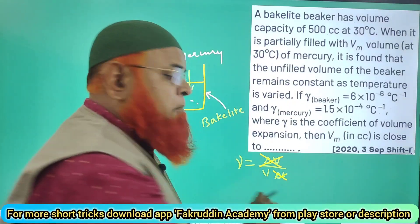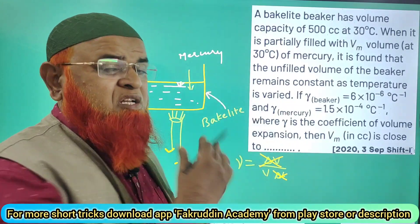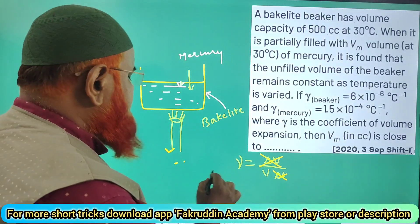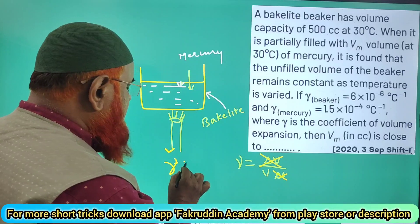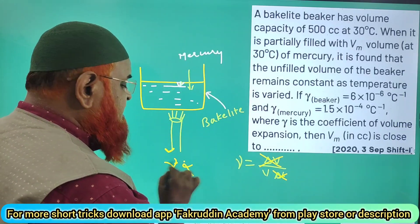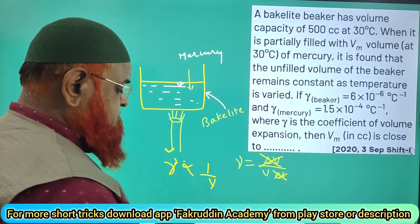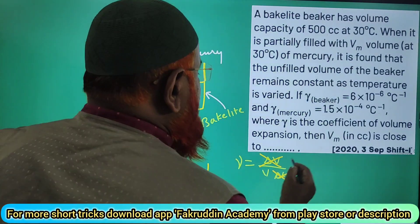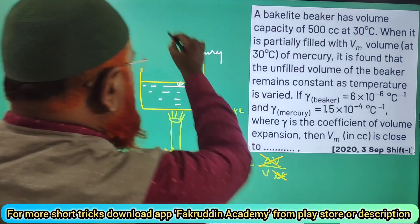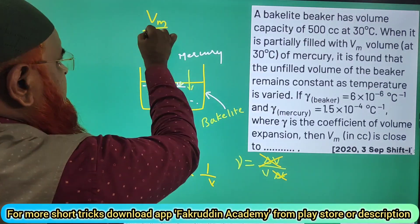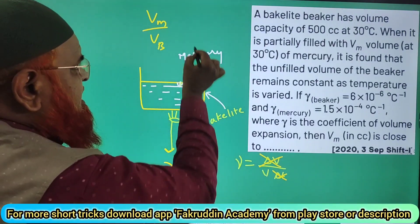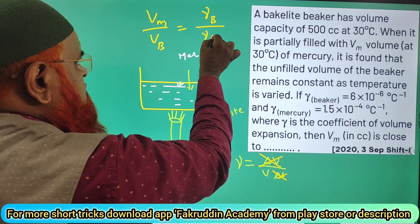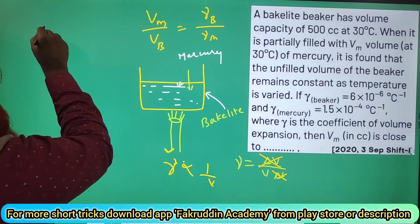Since ΔV and ΔT are constant, γ is inversely proportional to volume. So the volume of mercury divided by the volume of bakelite equals gamma of bakelite divided by gamma of mercury.